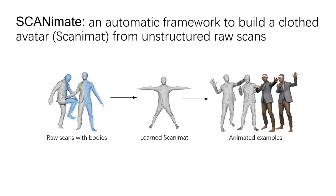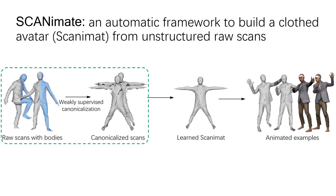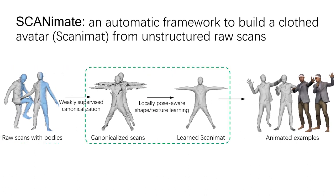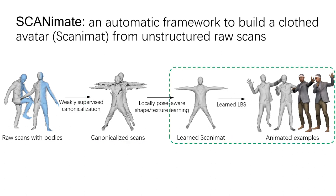In this work, we present Scanimate, an automatic framework to build a clothed avatar directly from unstructured raw scans without relying on surface registration. We first align all the scans to a canonical pose, then model clothed human shapes with pose-dependent deformations. After training, we can easily generate novel animations of the learned clothed avatar with realistic clothing deformation and texture.